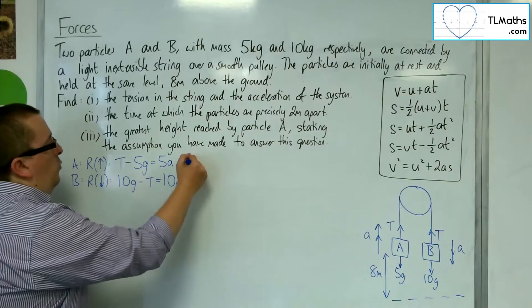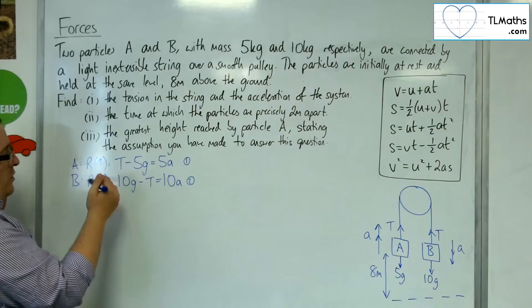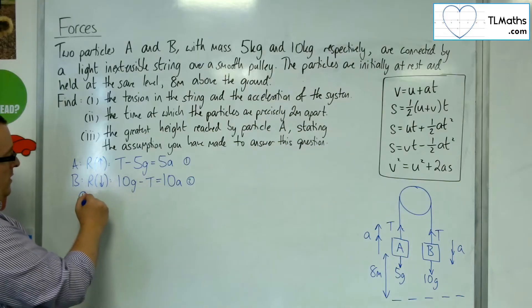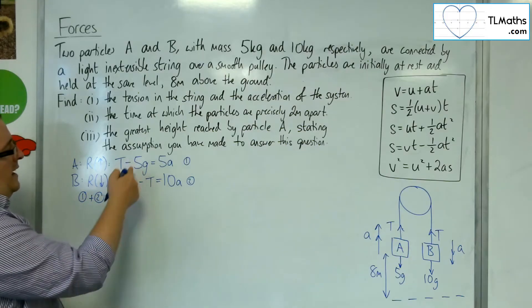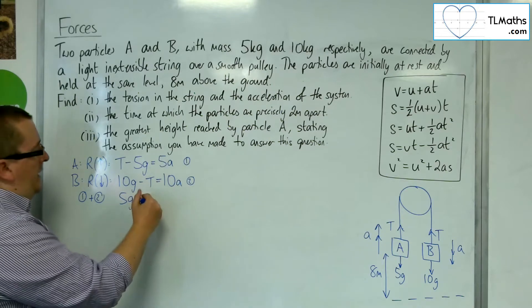So, here's equation 1, here's equation 2. So, if we add those two equations together, we can knock out the t's. So, 1 plus 2. We're going to get 10g take away 5g, so 5g. 5a plus 10a is 15a.